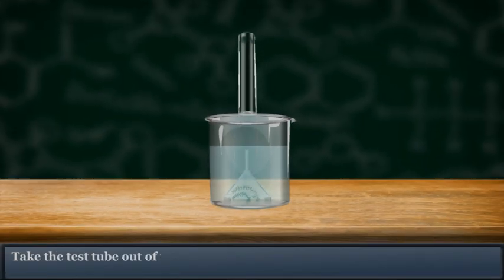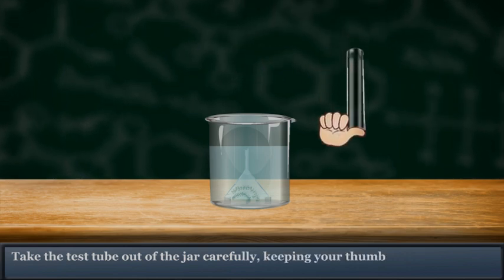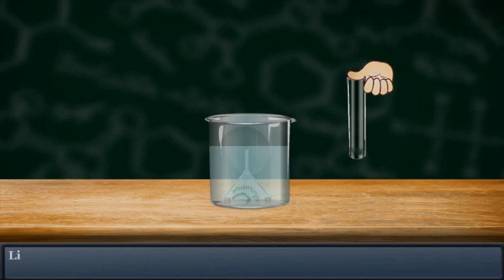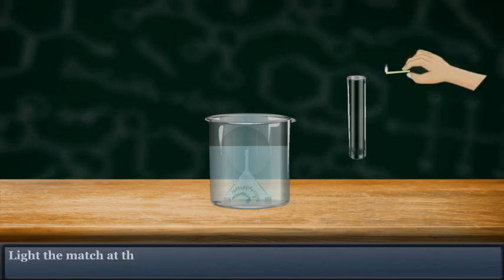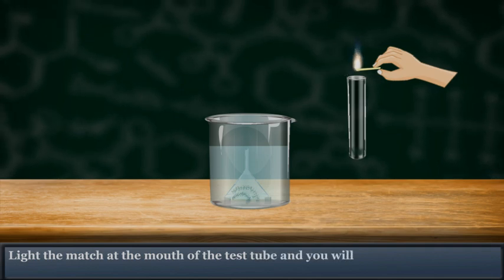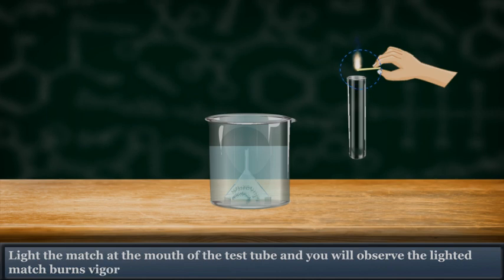Take the test tube out of the jar carefully. Keep your thumb over the test tube. Light the match at the mouth of the test tube and you will observe the lighted match burns vigorously indicating the presence of oxygen.